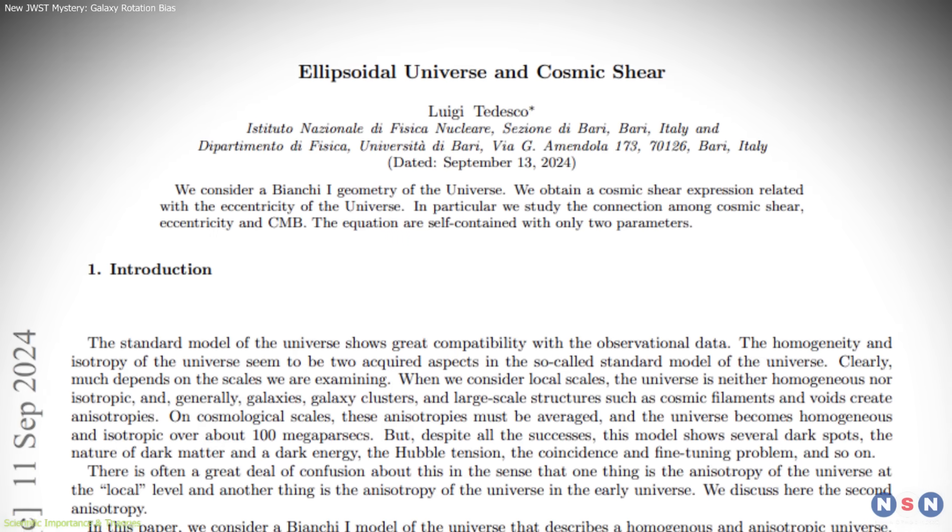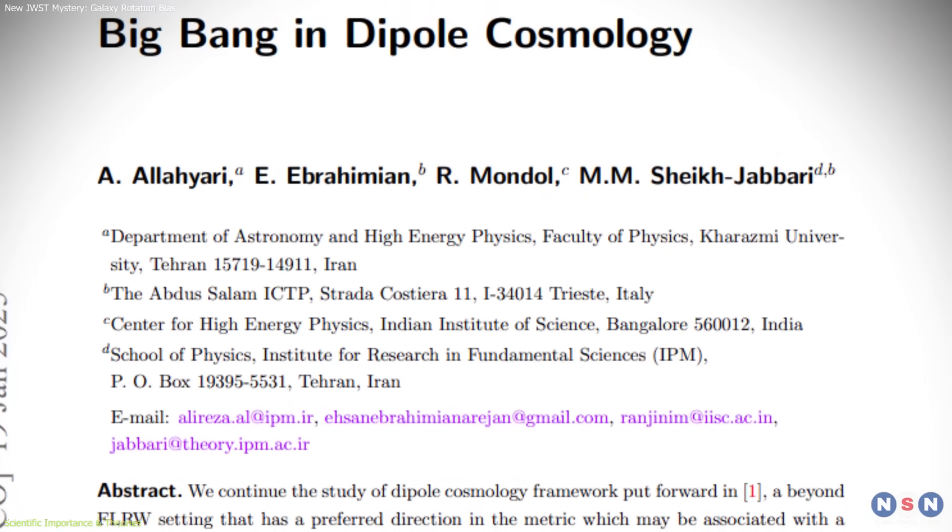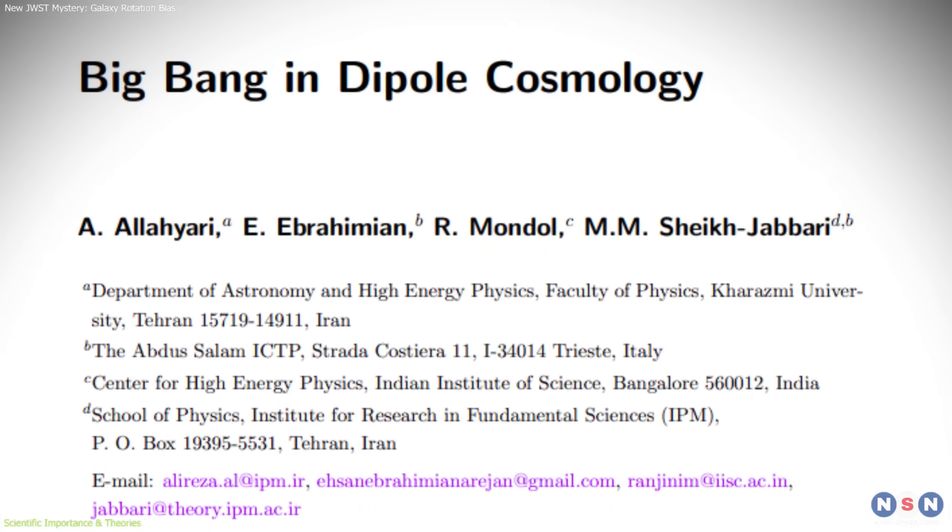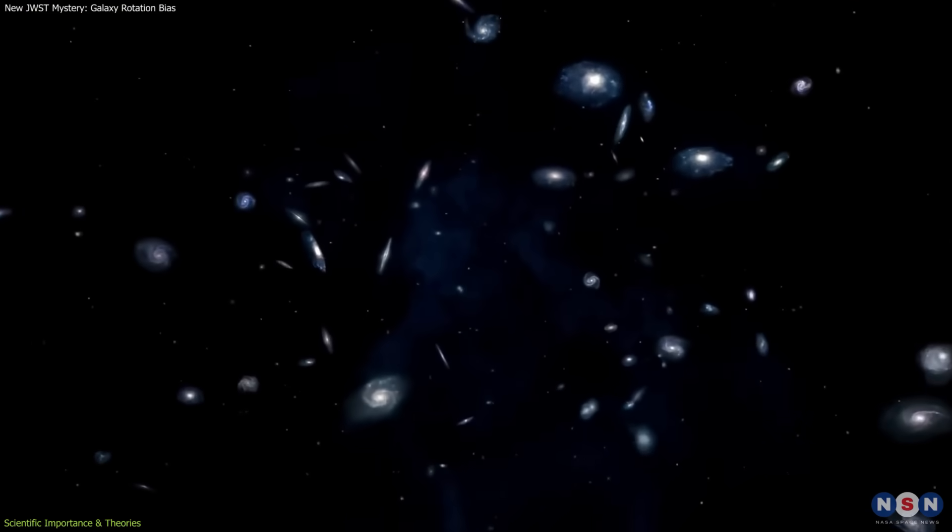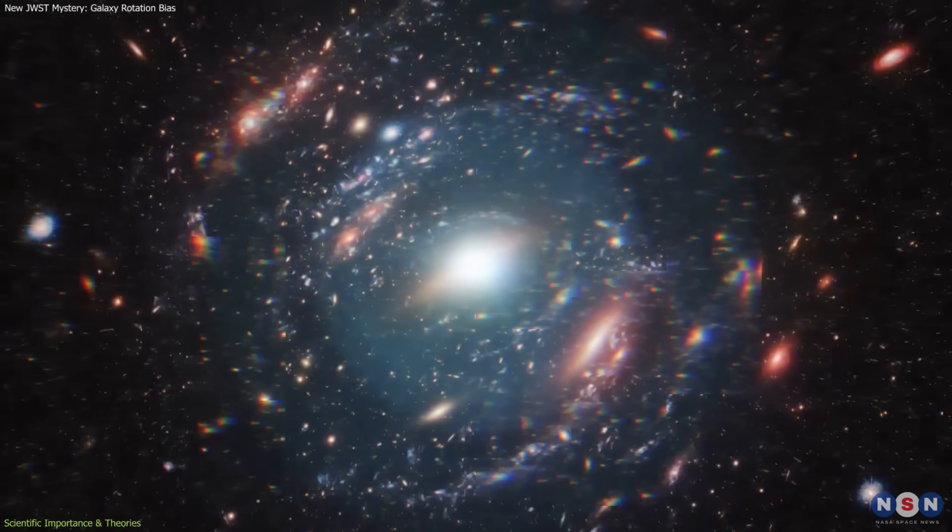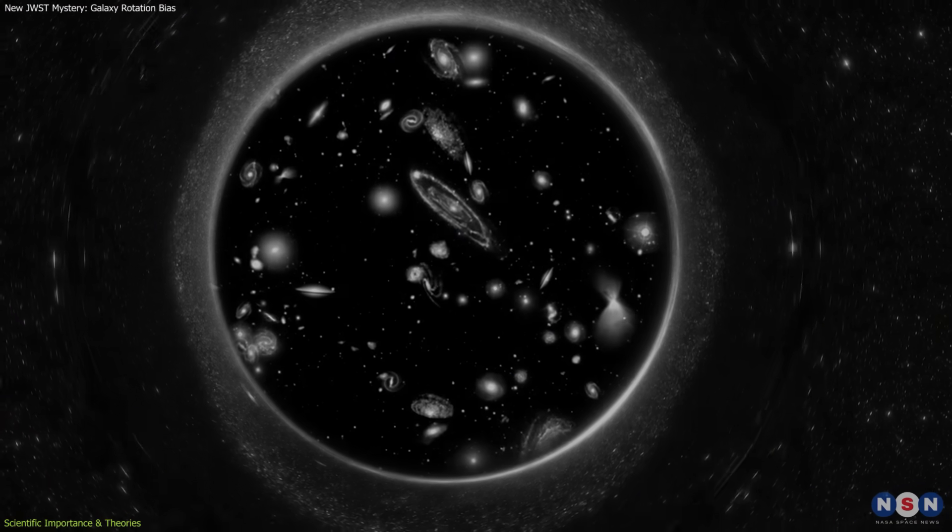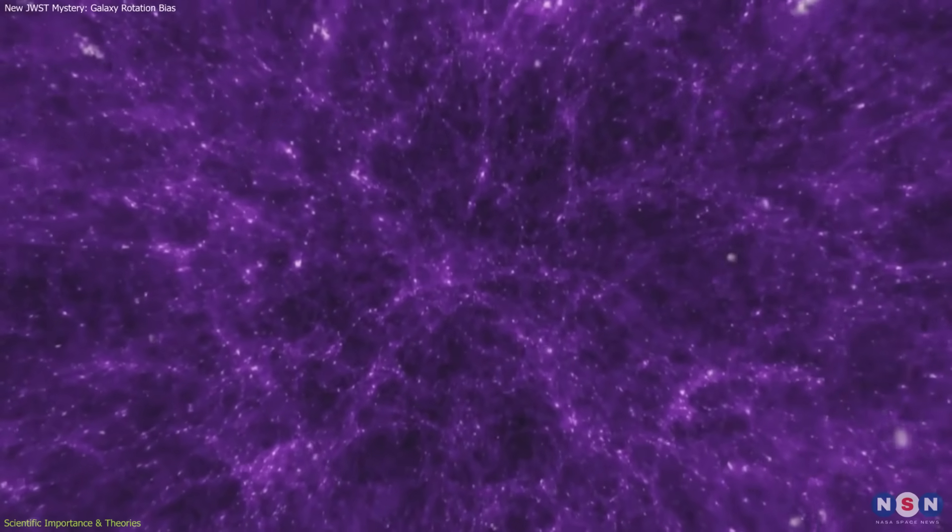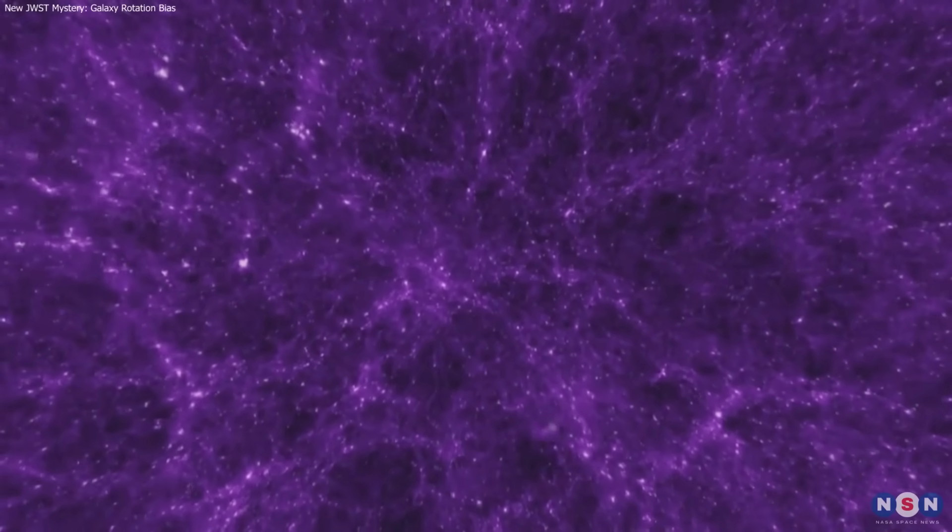Other models, such as an ellipsoidal universe or a dipole Big Bang, allow for large-scale asymmetry without invoking black holes or observational errors. While less radical than black hole cosmology, these models still challenge the neat, symmetric picture we've relied on for decades.